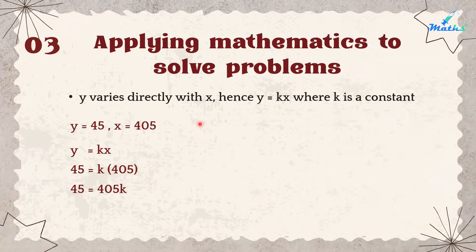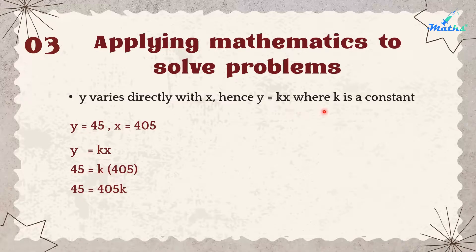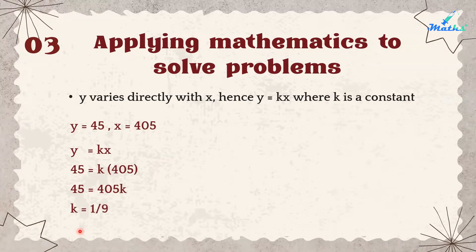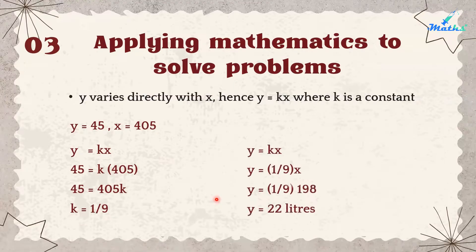Step 3 — Applying mathematics to solve the problem: Since y varies directly with x, we have y = kx, where k is a constant. You can refer to Chapter 1 of Form 5 for this formula. Substituting y = 45 and x = 405, we get k = 45/405 = 1/9.